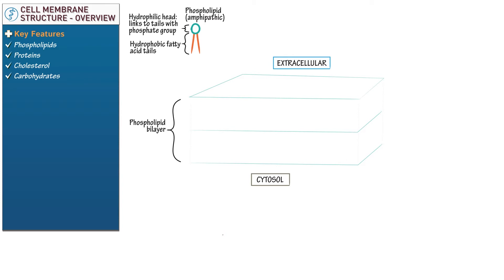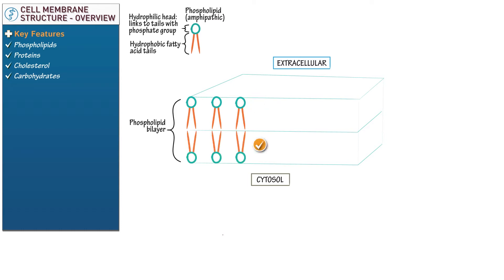Next, let's illustrate how amphipathic phospholipids arrange themselves in a bilayer. Draw a few phospholipids in the top row of our rectangle, then draw a few upside-down phospholipids in the bottom row. Let's take a closer look at this arrangement.